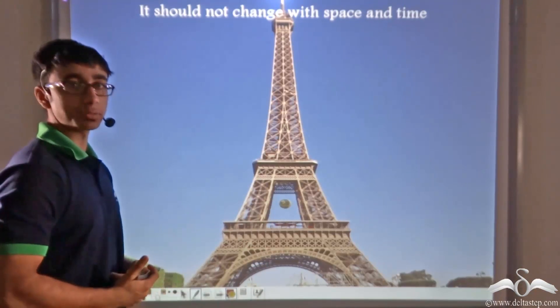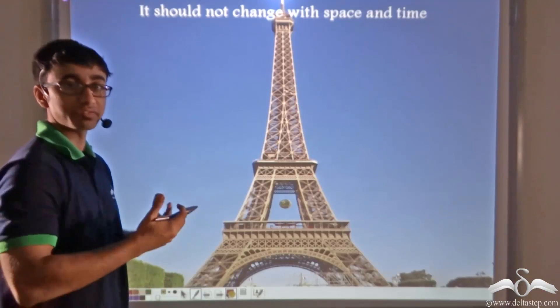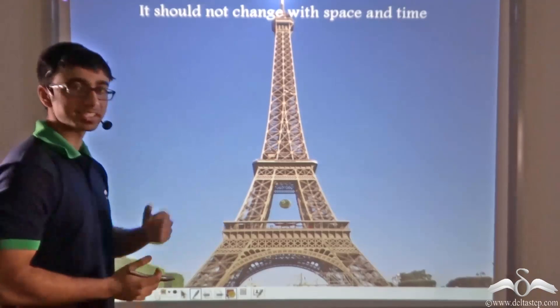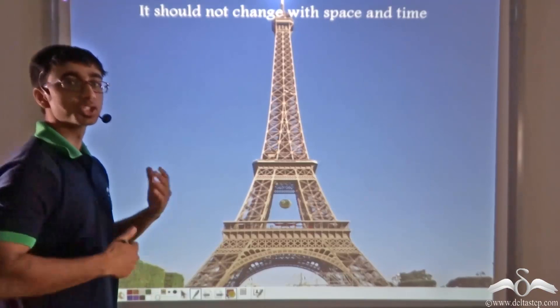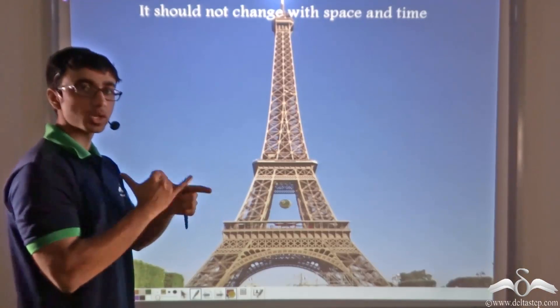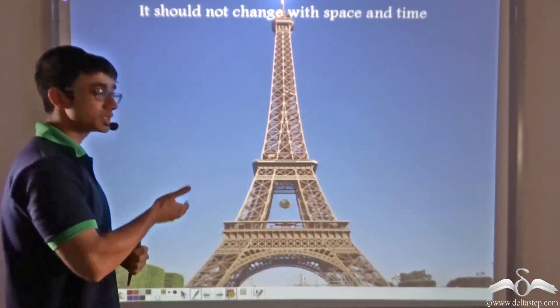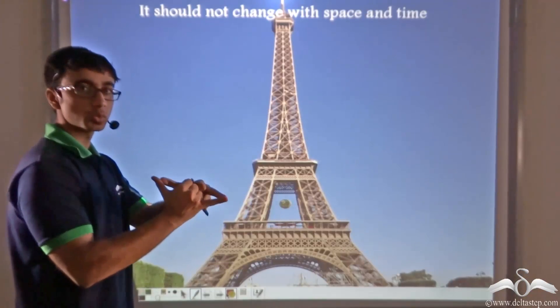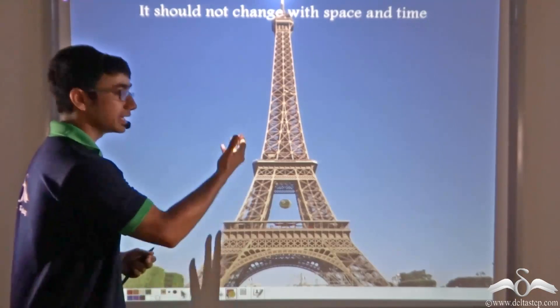Now again when he grows up and is let's say 30 or 35 years old, he wants to do the same. But obviously in growing up, his handspan will also have changed. So when he was young, his handspan was small and now when he has grown up, his handspan will also be longer than what it was previously.